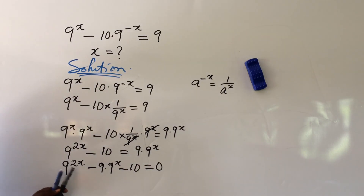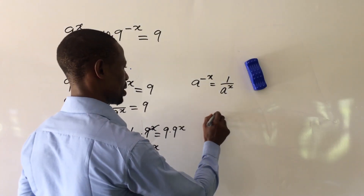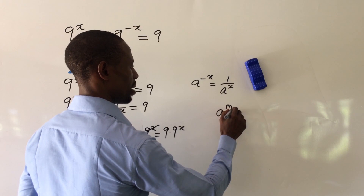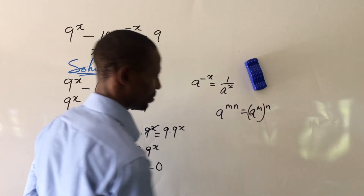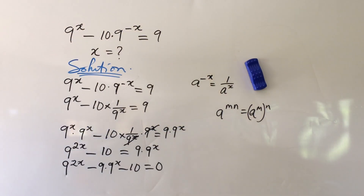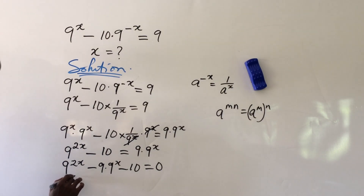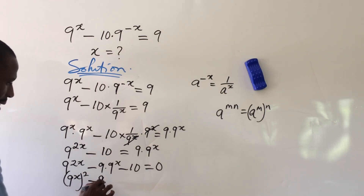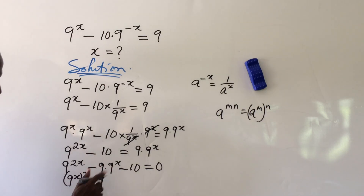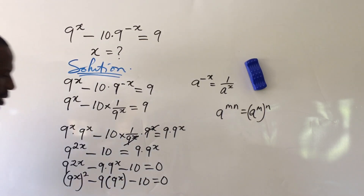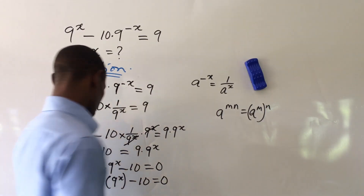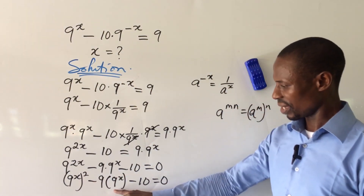We can split this power using the law that says a to the power of mn equals (a to the power of m) to the power of n. Applying this, 9^(2x) becomes (9^x) squared. So we rewrite the expression as (9^x) squared minus 9 times (9^x) minus 10, all equal to zero.